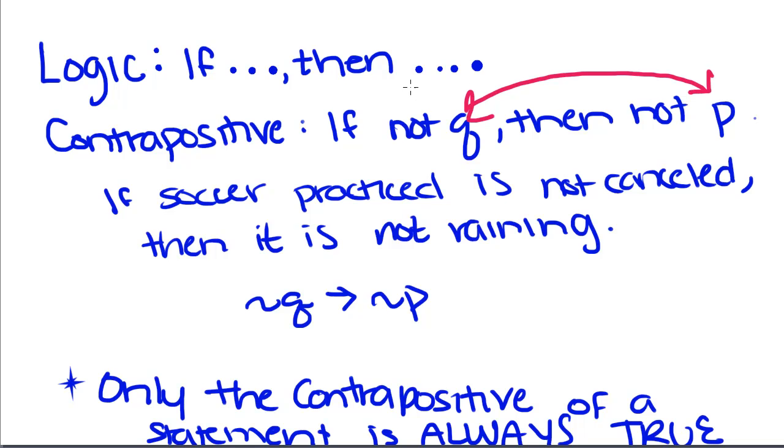So if soccer practice is not canceled, then it is not raining, where we have not Q that implies not P.